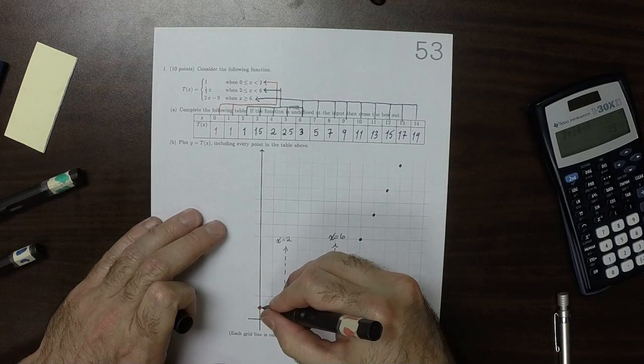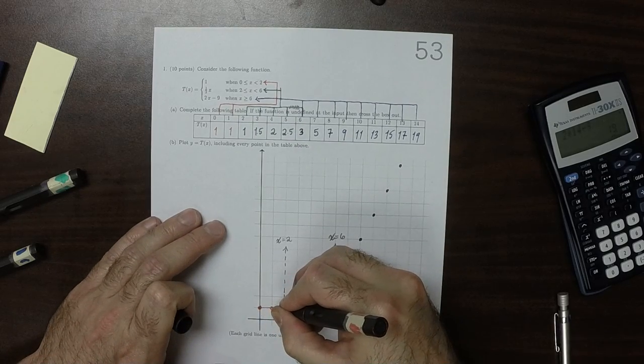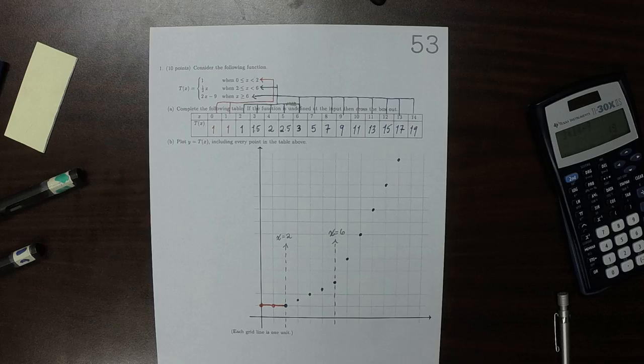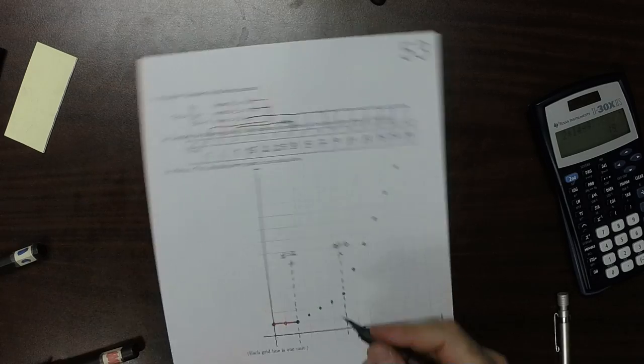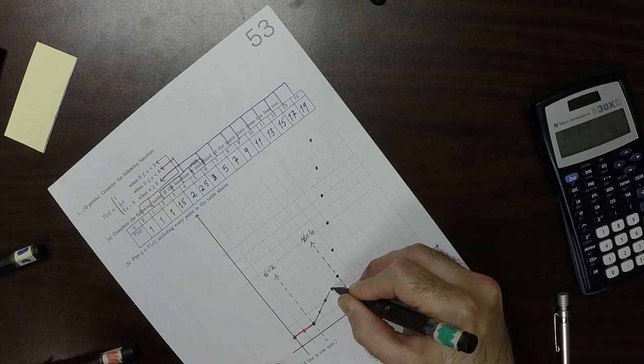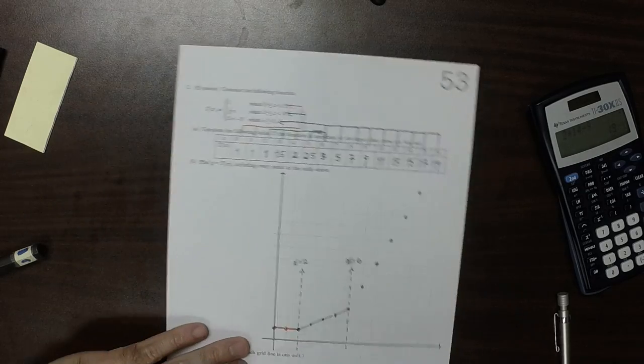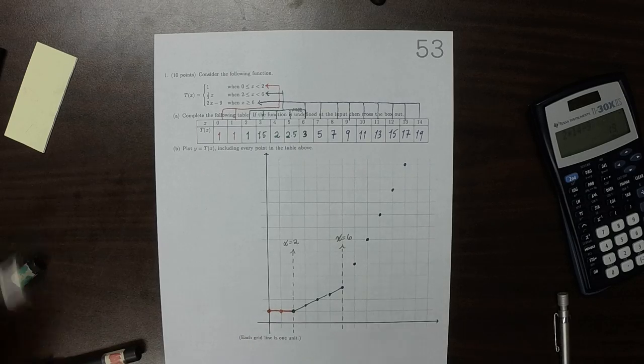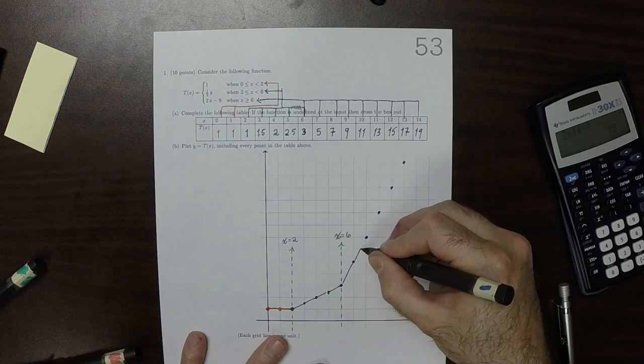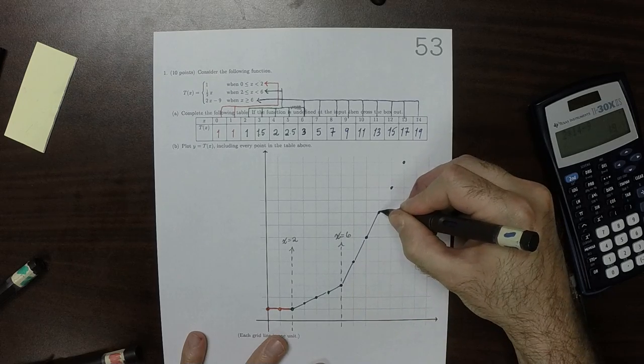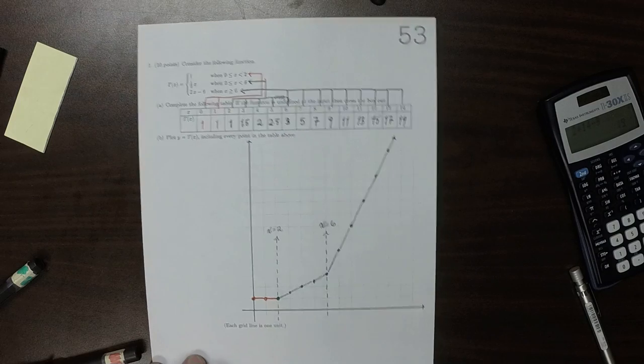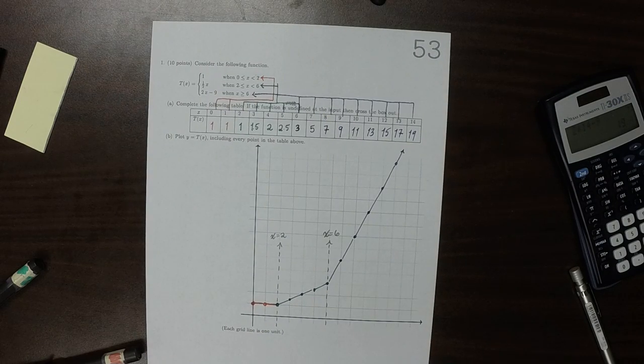So that means that in coloring this in, this is the red function and it goes all the way here. And then the green is this, it goes all the way to there. And then the blue, it goes all the way. All right.